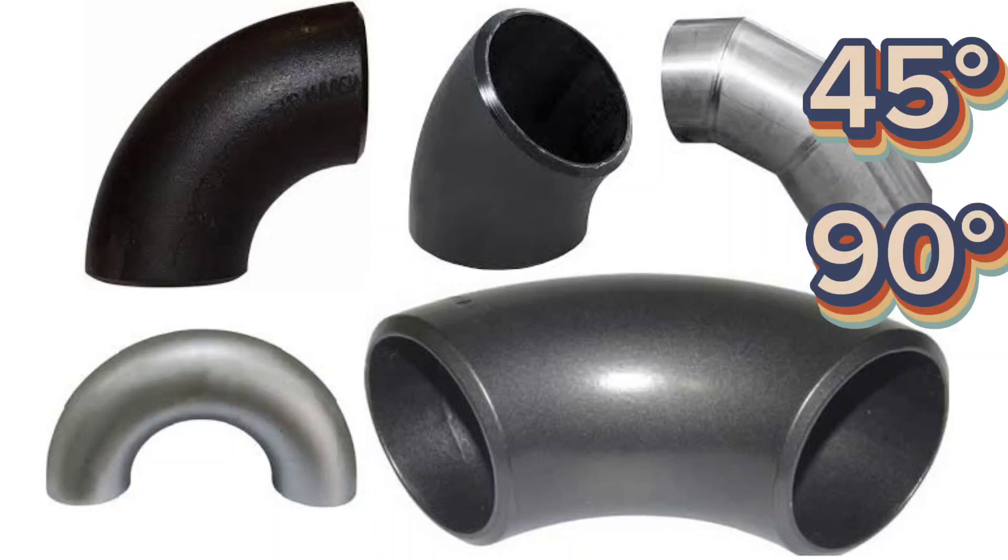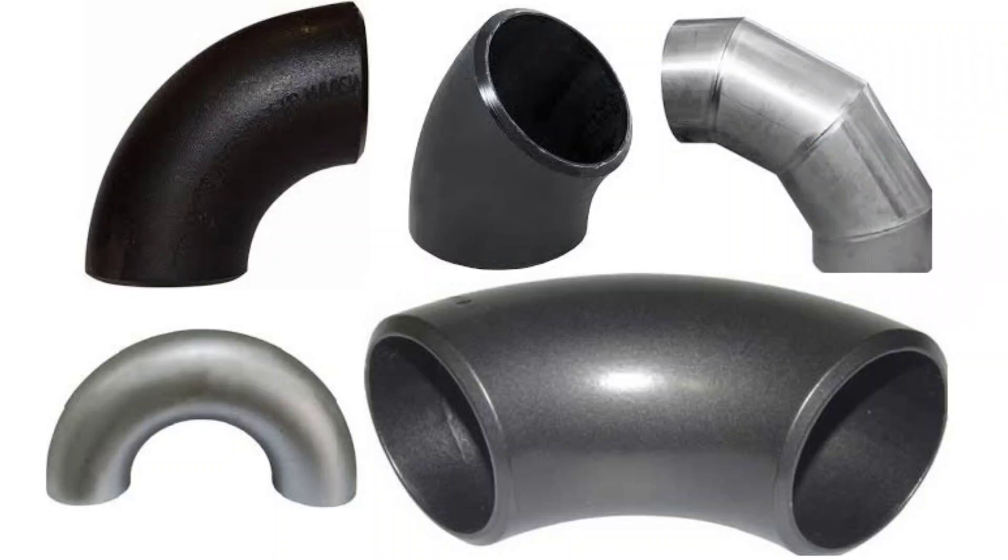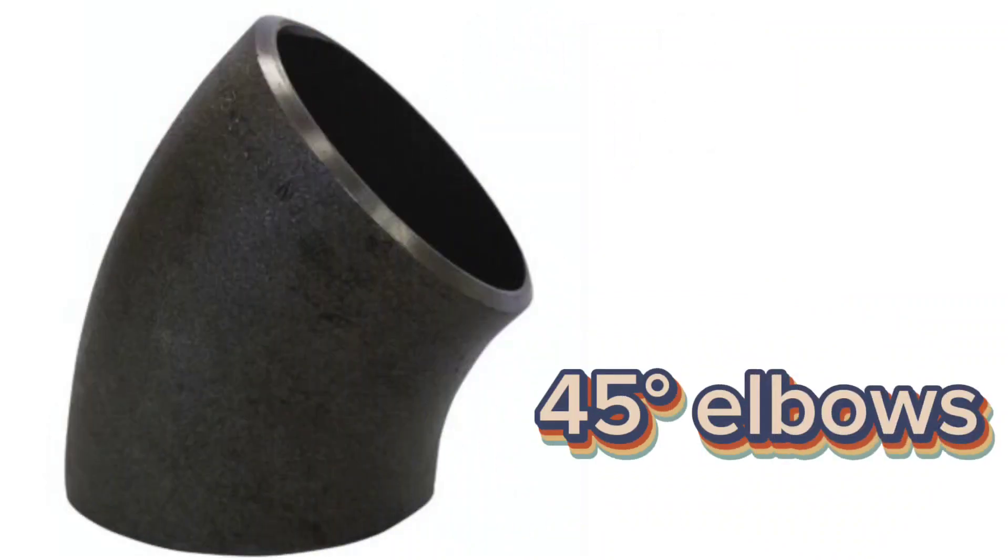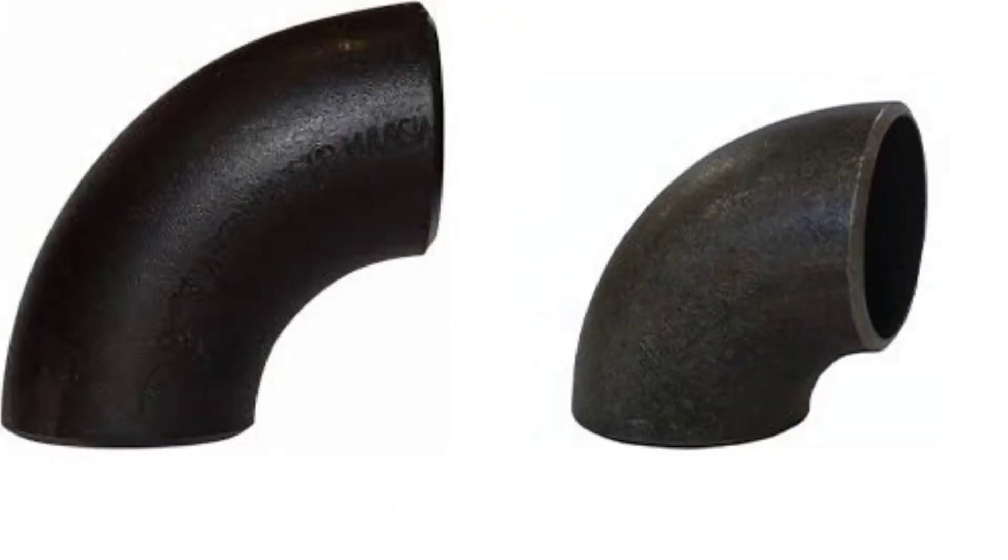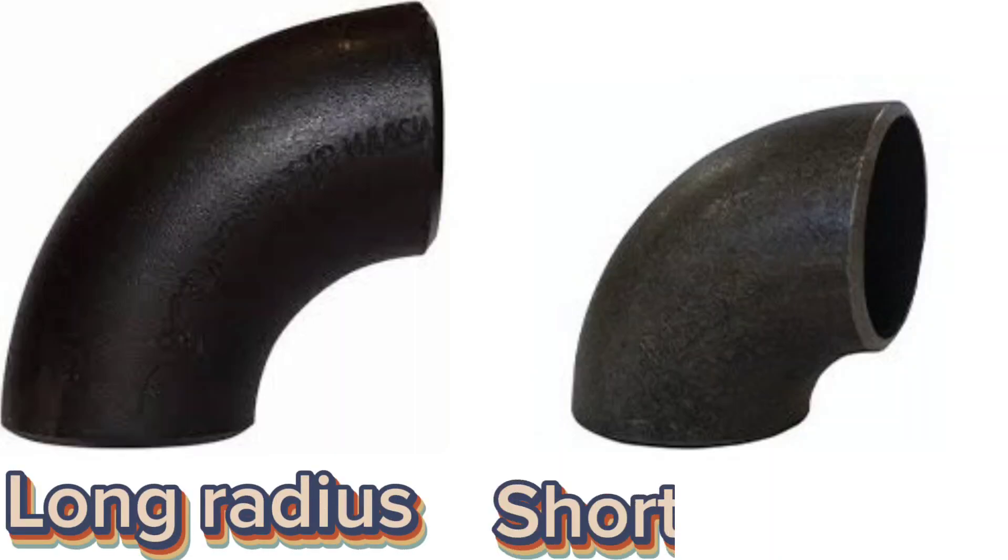The most used elbows in pipeline industries are 45 degree elbows and 90 degree elbows. Elbows are available two radius types, long radius elbows and short radius elbows.